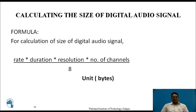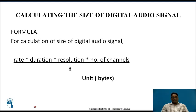So how do we calculate the size of a digital audio signal? The following formula is used: rate × duration × resolution × number of channels ÷ 8. The sampling rate generally denotes the duration of a sound wave, resolution generally denotes the variation in the sound wave, number of channels includes the stereo channels, and 8 generally denotes the bits used for the conversion process.